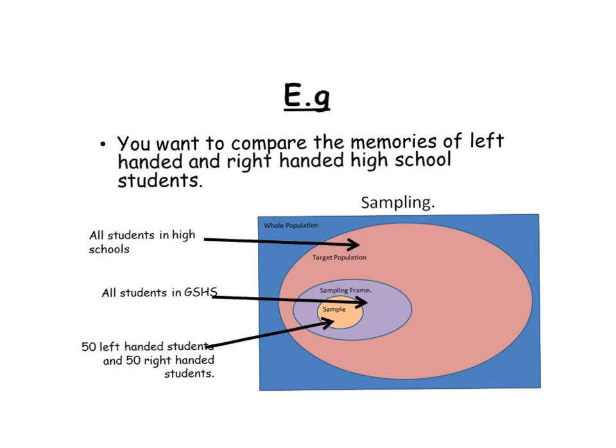One more example before we move on. You want to compare the memories of left-handed and right-handed high school students. The whole population is everyone within society. The target population are students who are in high school. The sampling frame — because I work at George, I might ask students at George. And then from that I would pick perhaps 50 left-handed students and 50 right-handed students and compare and contrast their memories.